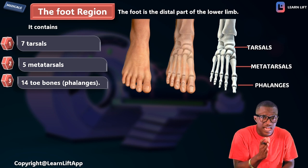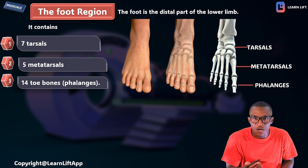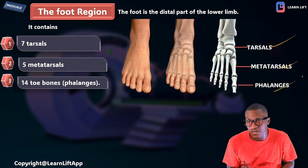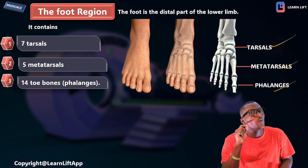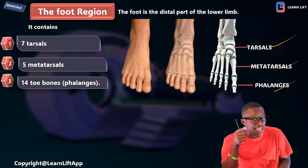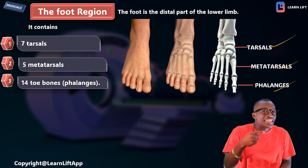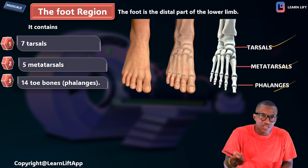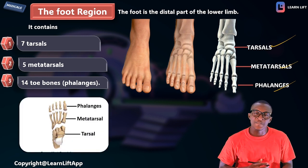Looking at the mental picture, you can see the talus, the metatarsals, and the phalanges. Seven tarsal bones plus five metatarsals plus fourteen phalanges gives a total of 26 bones in the foot. The hand has 27 bones, but the foot has 26 bones. Calculate: 5 + 7 = 12, 12 + 14 = 26.